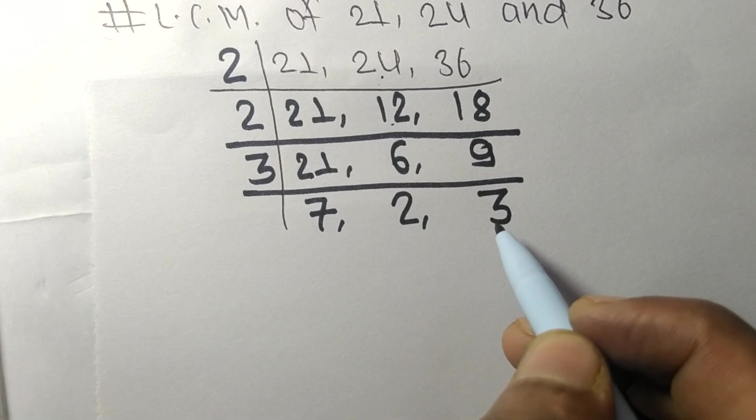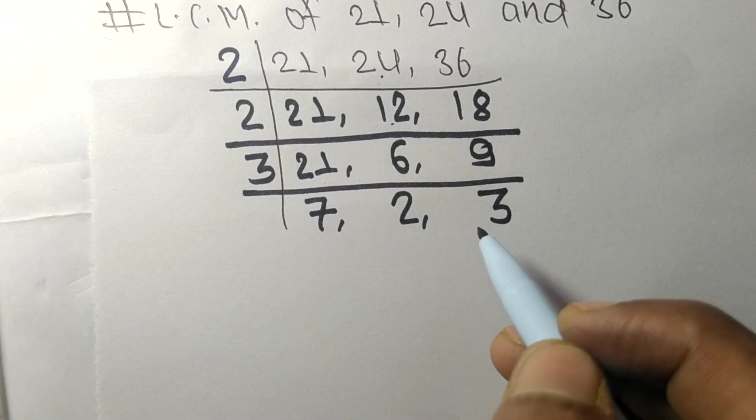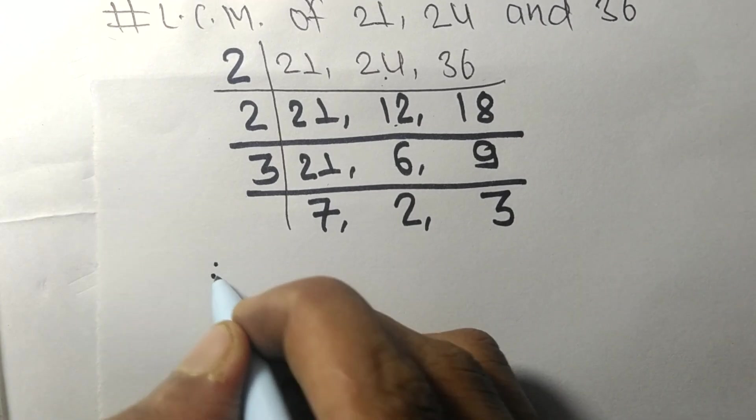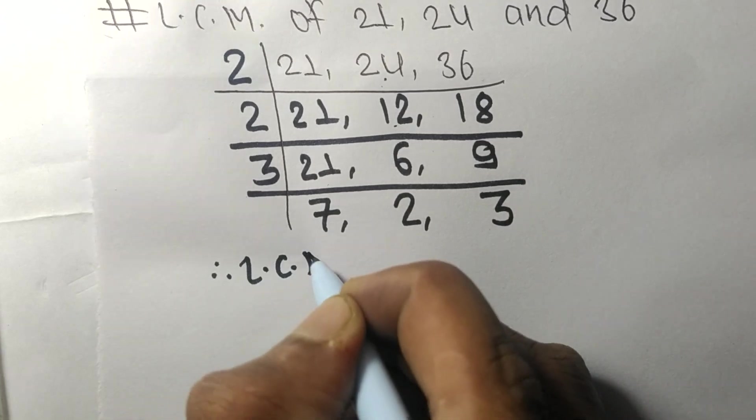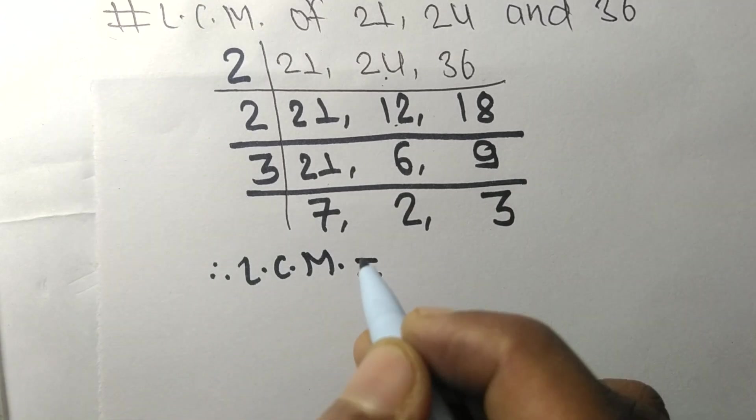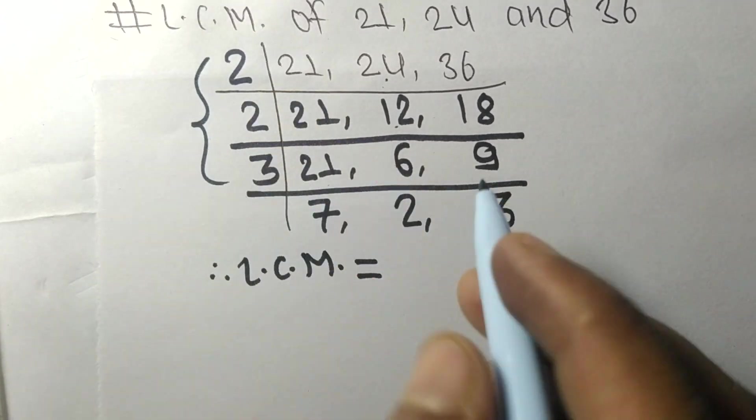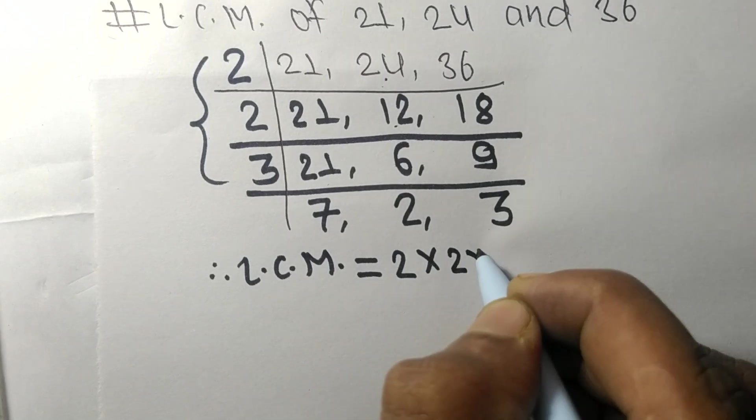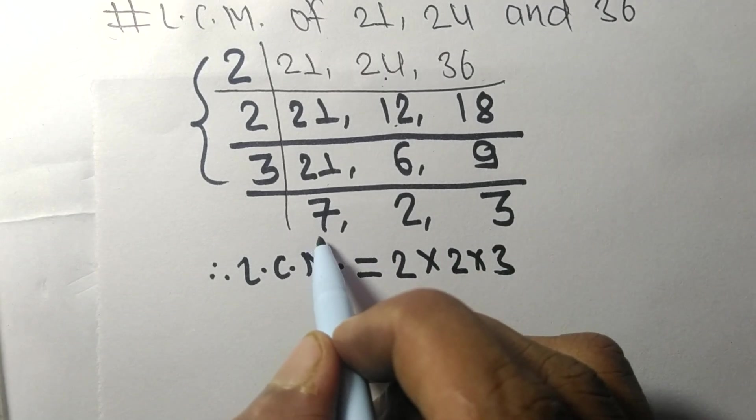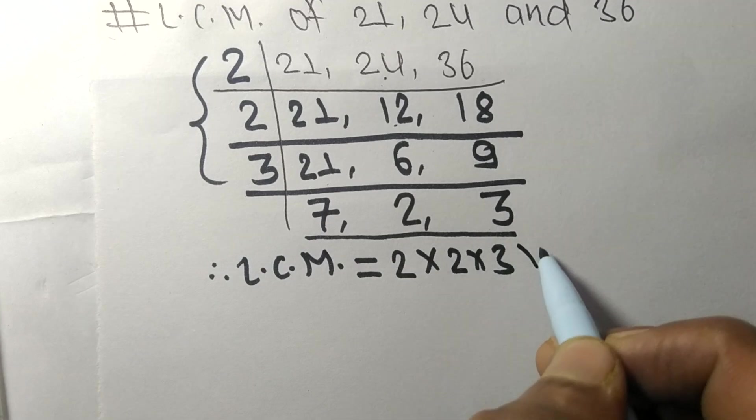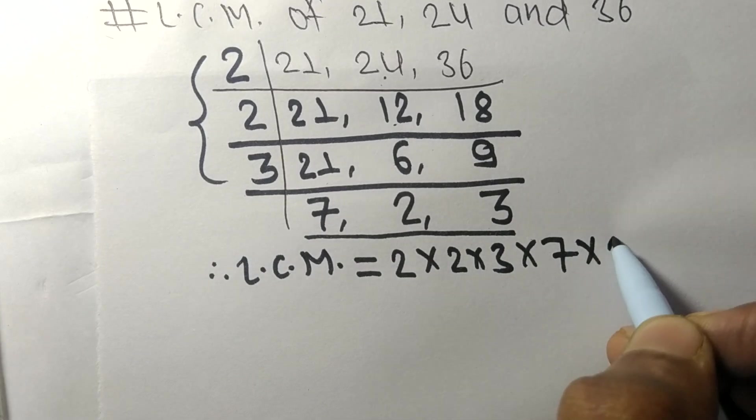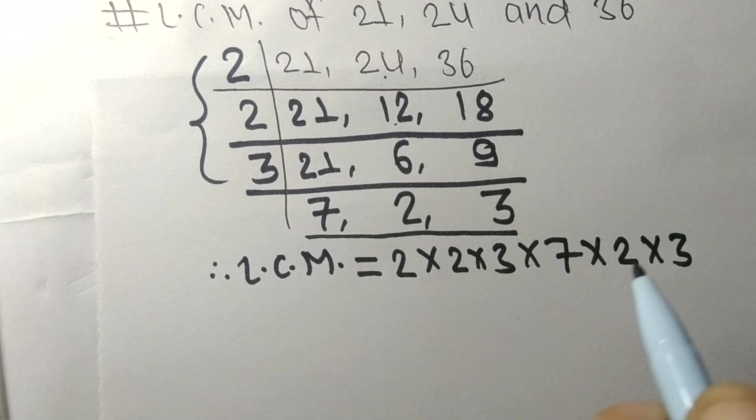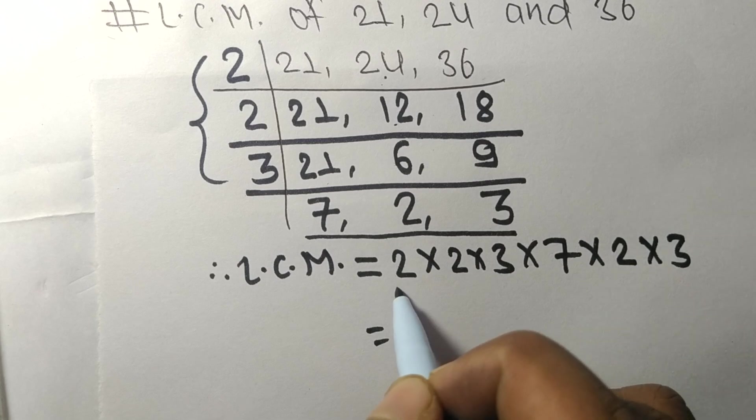Therefore, the LCM is equal to: from this side it is 2 times 2 times 3, and from this side we get 7 times 2 times 3. So by multiplying all these numbers we get 504.